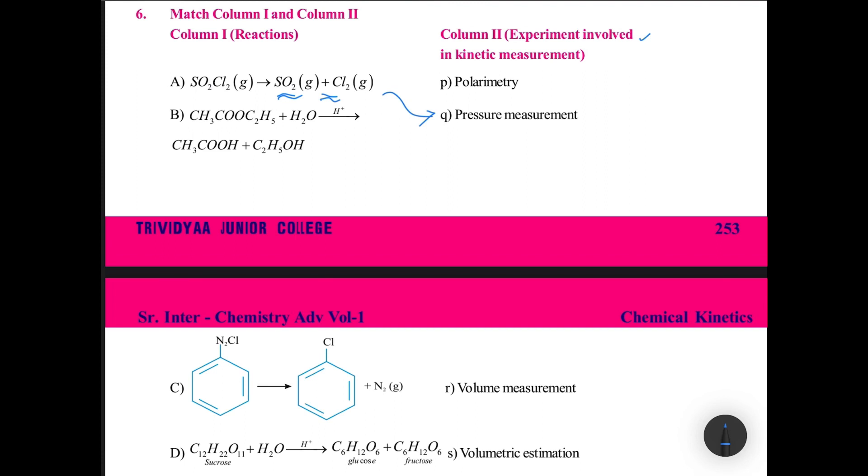SO2Cl2 case you are using their pressure measurement. CH3COOC2H5 plus H2O gives rise to acid and alcohol, for this we generally go with the volumetric estimation.